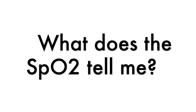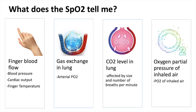What information does the SpO2 number give me? The SpO2 is the saturation given by the pulse oximeter reading, and this is affected by several factors. Firstly, the finger blood flow, which is also affected by finger temperature. Secondly, all the gas exchange processes happening in the lungs. Thirdly, the carbon dioxide level in the lung air sacs, which in turn is affected by the size and number of breaths taken per minute. And lastly, the partial pressure of oxygen in the inhaled air.